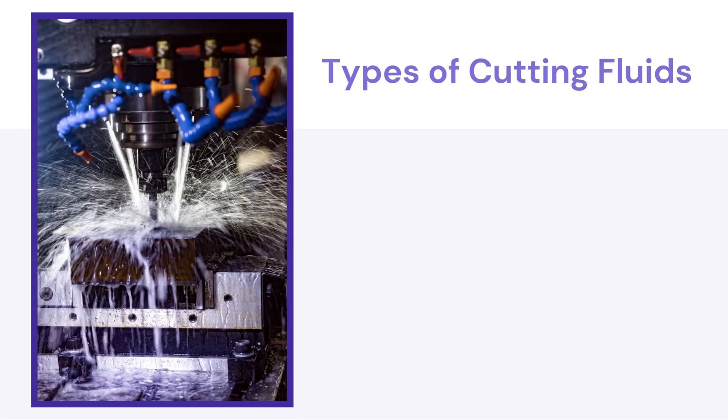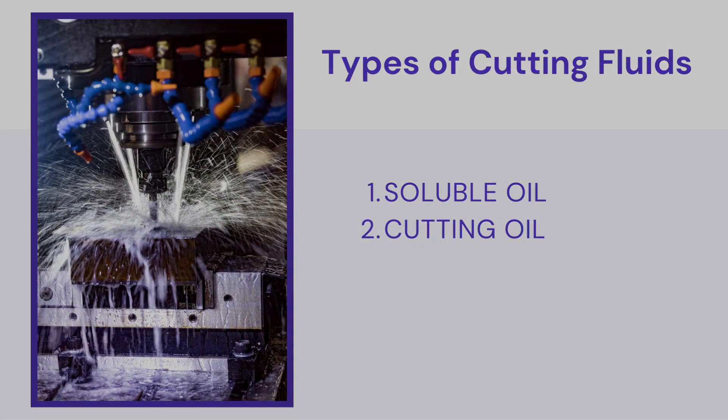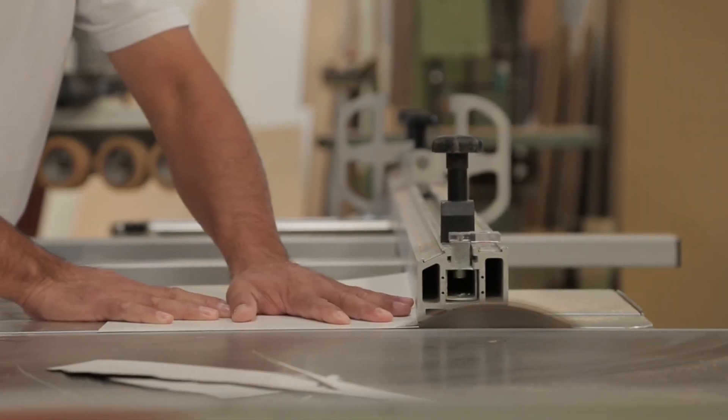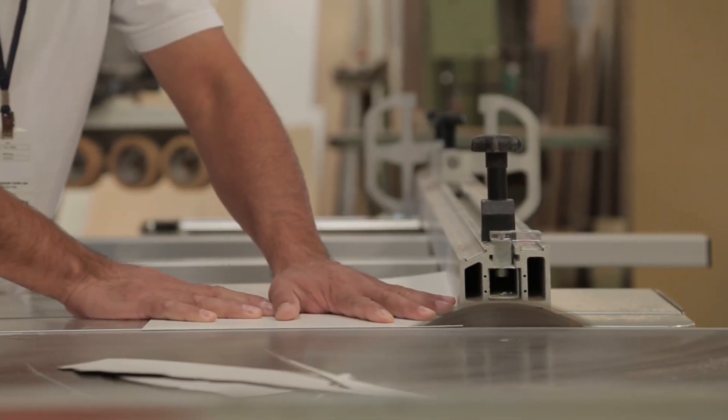Next is cutting oil. It is a mixture of mineral oil and fatty oil. It is mainly used in hand cutting machinery. It can be used as a coolant as well as a lubricant for low cutting and high cutting rates respectively.